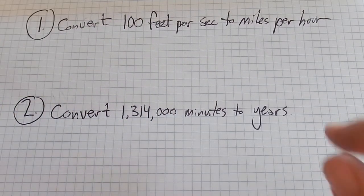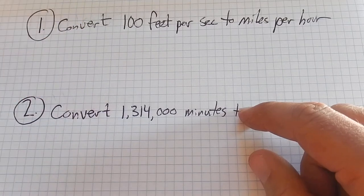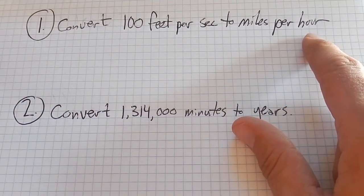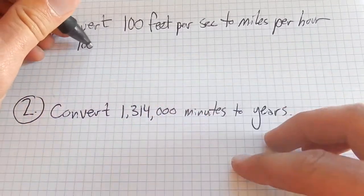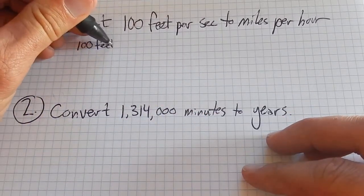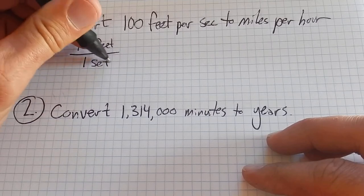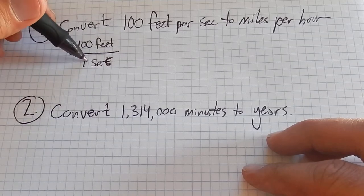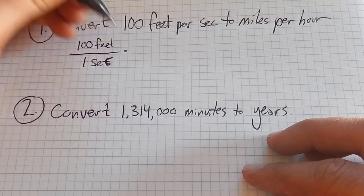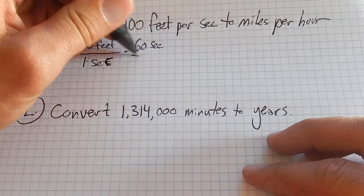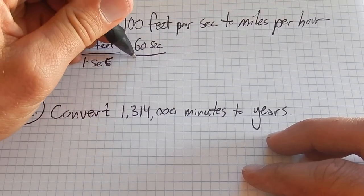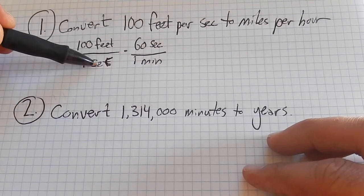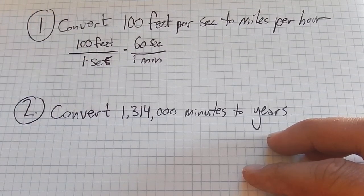I'm going to first deal with my seconds and turn them into hours. So, 100 feet in 1 second - that's what feet per second means. Now I'll turn seconds into minutes. That's the same as 60 seconds in 1 minute. Notice I have seconds divided by seconds, so my seconds cancel out here.